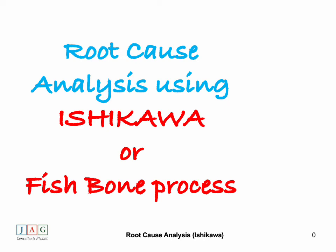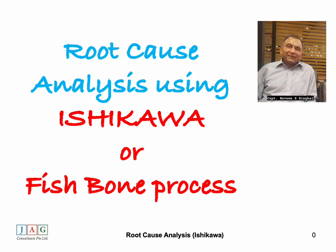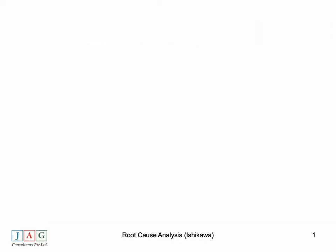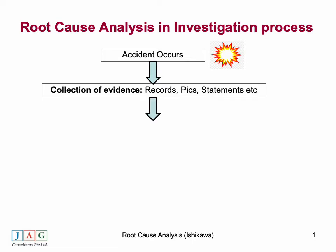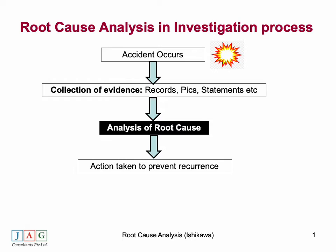Welcome to this session where we will discuss a simple process for assessing the root cause of any accident. This process is called the Ishikawa or fishbone process. When an accident occurs, an investigation is initiated and the investigation team collects evidence in the form of records, pictures, and statements. The team then conducts an analysis to assess the causes that led to the accident, particularly the root cause. In this session we will discuss the Ishikawa or fishbone process of investigation.